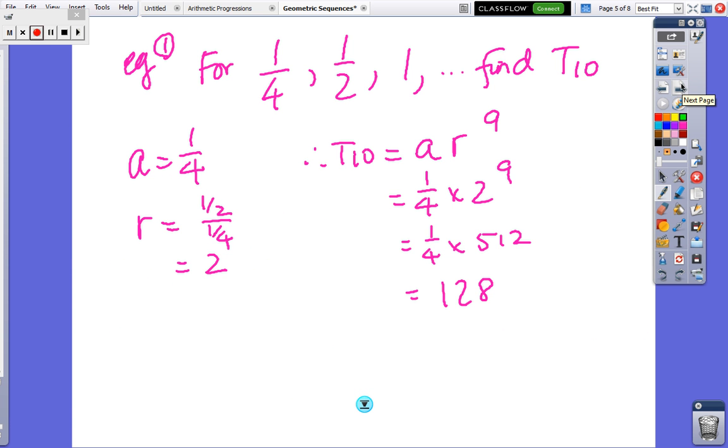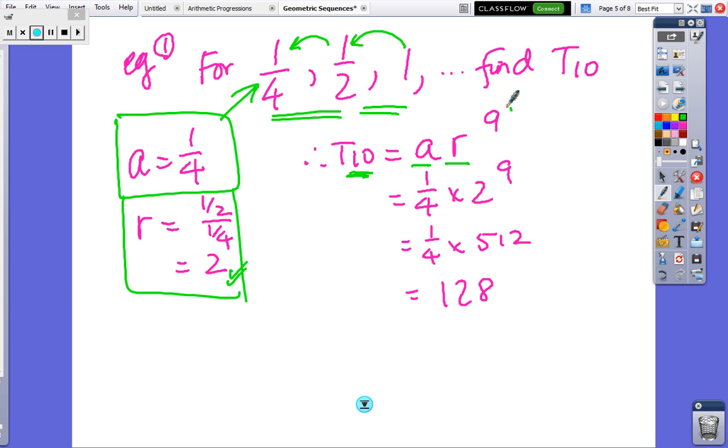So we've got 1/4, 1/2, 1, find T10. The first thing you do is A is the first number, and to find R, just divide two successive terms. Now to make sure it's a GP, divide those numbers and you get 2, divide those numbers and you get 2. So we've got the same R, you've got to have the same R, otherwise it's not a GP. So T10 will be AR one less power, so it's 1/4 times 2 to the 9, and just use your calculator, the answer's 128.